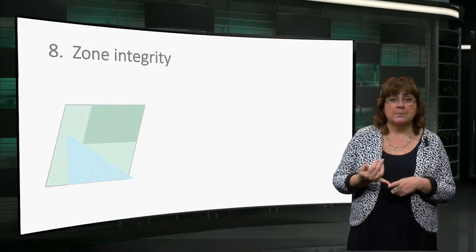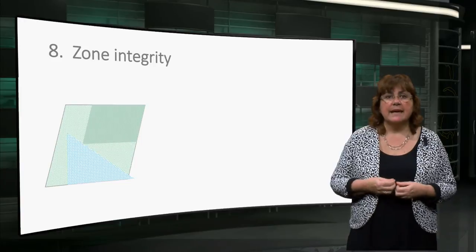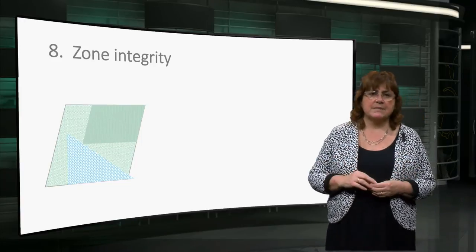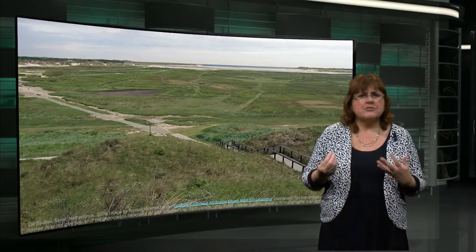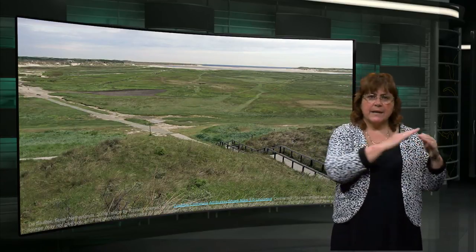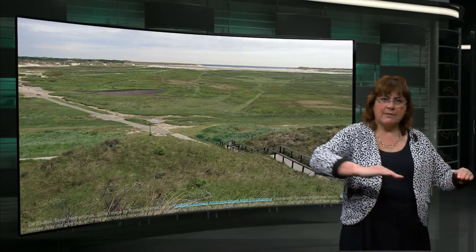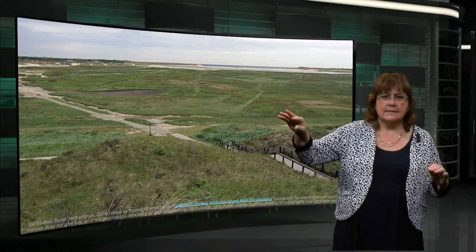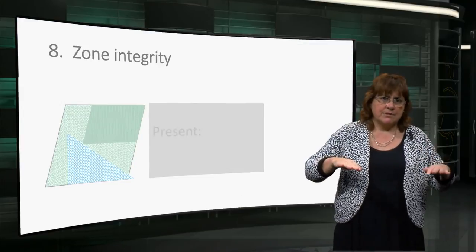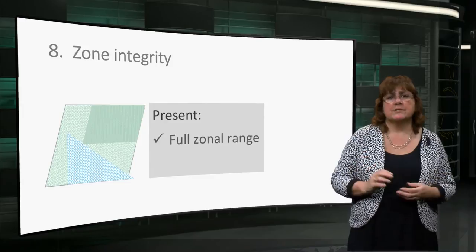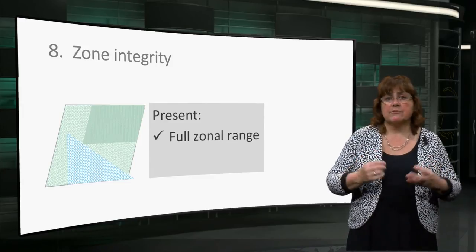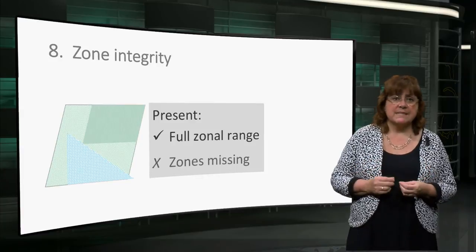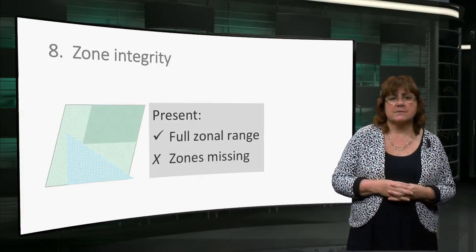The eighth principle of zone integrity aims to ensure that the natural mosaic of the ecosystem is fully represented. For instance, an estuarine salt marsh is characterised by a continuum from submerged mudflat to the upland zone that is only occasionally inundated. The presence of the full range of zonal diversity is a condition for ecosystem health. When one or more zones are missing, the integrity of the ecosystem is compromised.